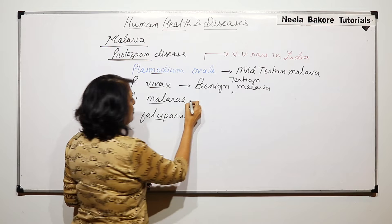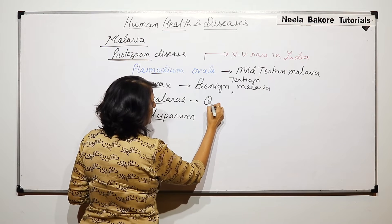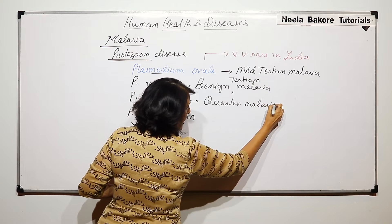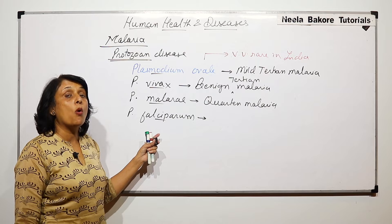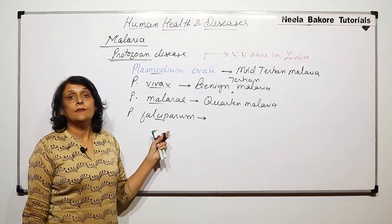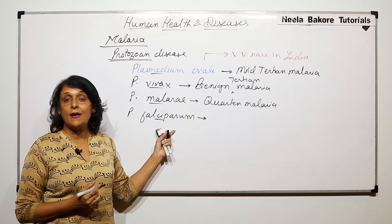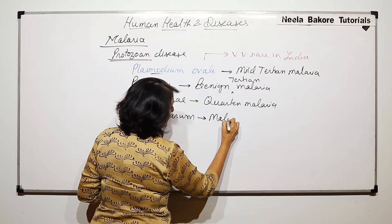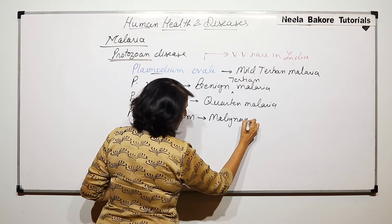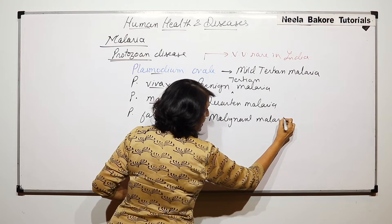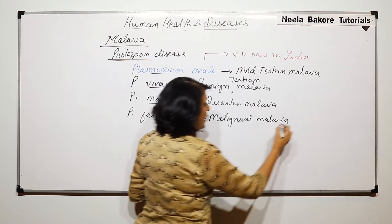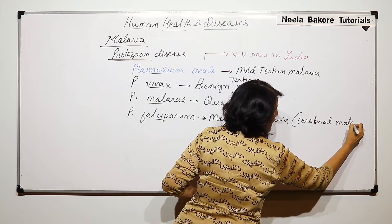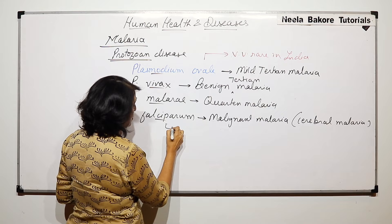Plasmodium malariae causes quartan malaria. Plasmodium falciparum is the most dangerous — the malaria caused by it is very serious and is called malignant malaria. There is one more name: it is also known as cerebral malaria. It is the most serious.